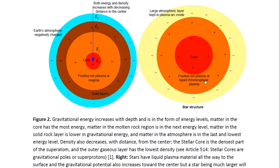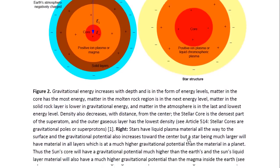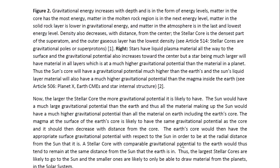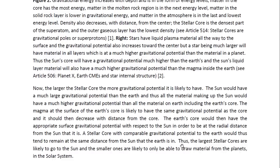With a star it's similar, except stars are much larger objects, so all the material would have a much higher gravitational potential than the material that comprises a planet. Stars also have a liquid layer, which we can call the chromosphere, that goes all the way to the surface, and then they have a gaseous atmosphere. The larger the stellar core, the more gravitational potential it is likely to have. The Sun would have a much larger gravitational potential than the Earth.